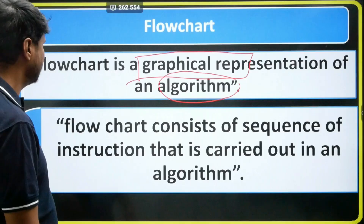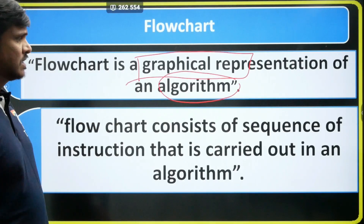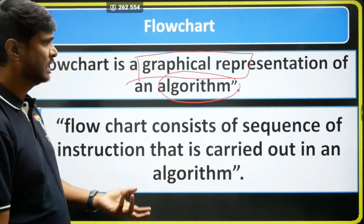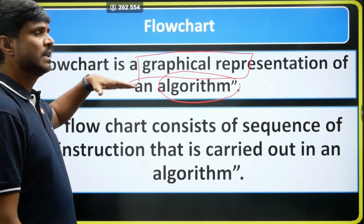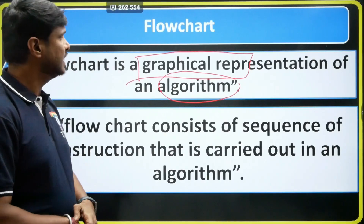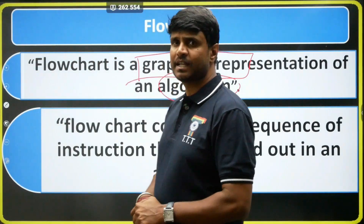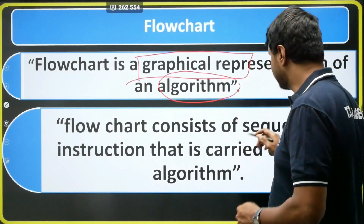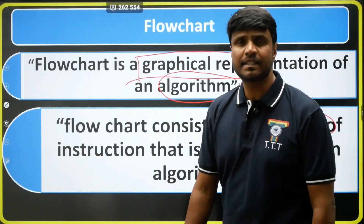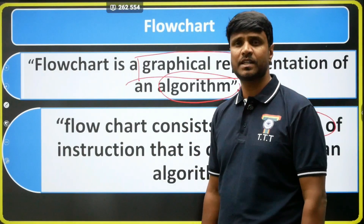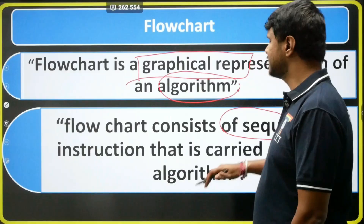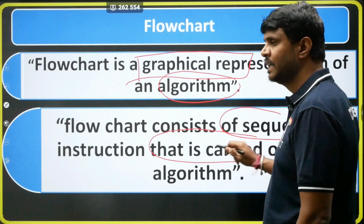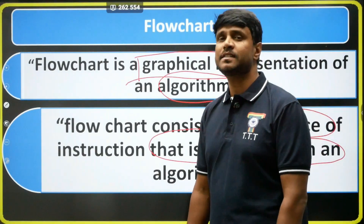I have given two definitions for flowchart. The first definition is: a flowchart is a graphical representation of algorithm. The second definition is: a flowchart consists of a sequence of instructions. These instructions carried out an algorithm. This is the second definition we have.